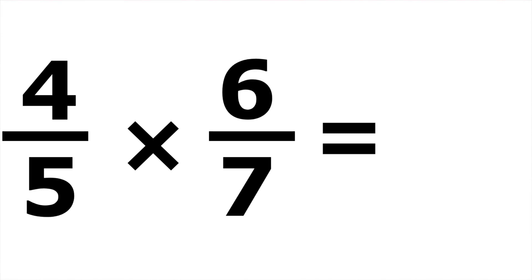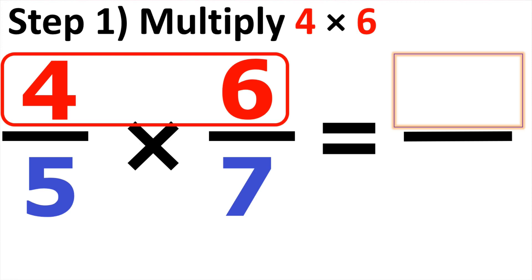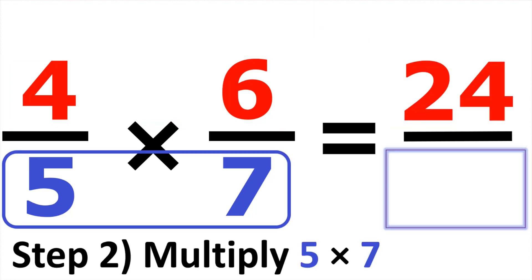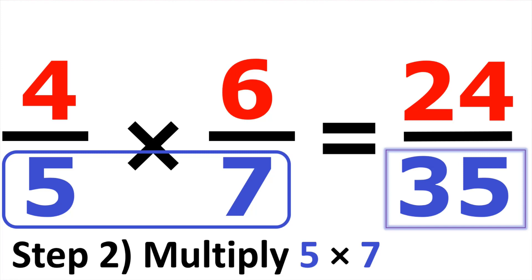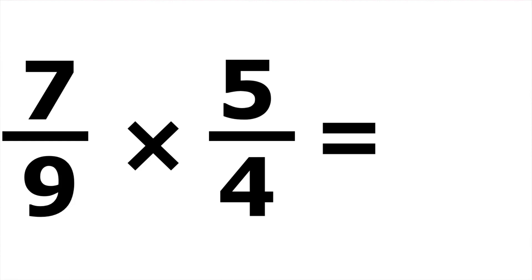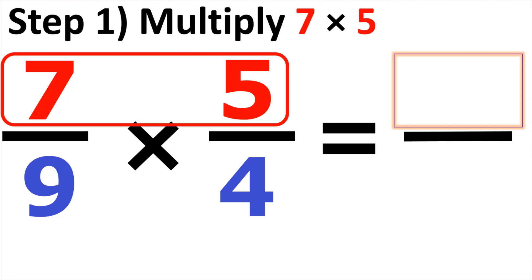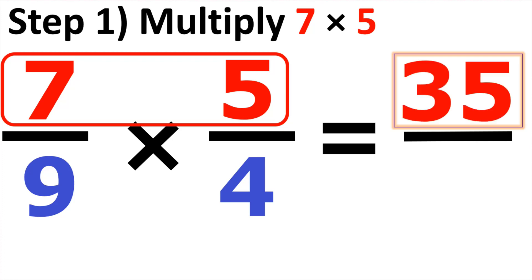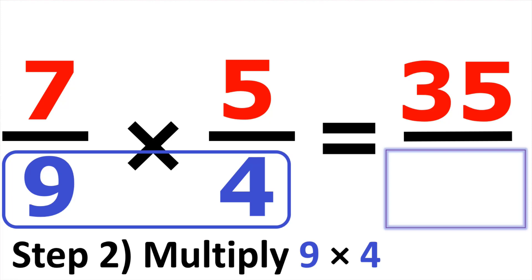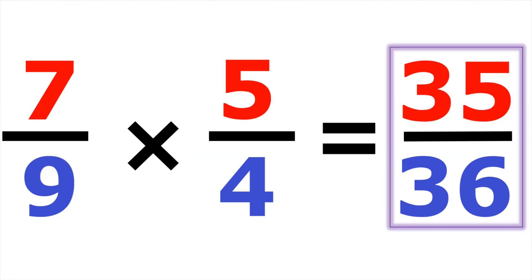Number eighteen, we have four over five times six over seven. Multiplying up top: four times six gives us twenty-four. At the bottom, five times seven gives us thirty-five. The answer is twenty-four over thirty-five. Number nineteen, we have seven over nine times five over four. Up top, seven times five gives us thirty-five. At the bottom, nine times four gives us thirty-six. So the answer is thirty-five over thirty-six.